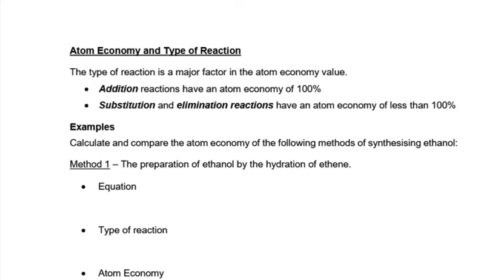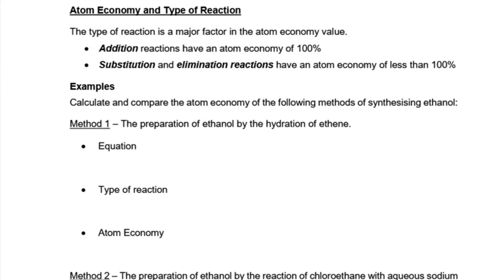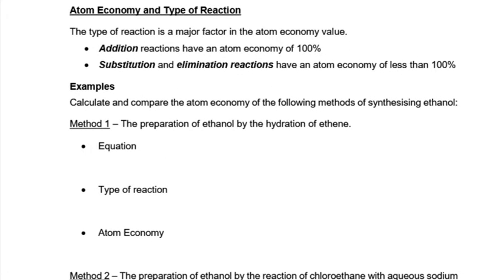Let's consider then how the type of reaction could be changed in order to improve the atom economy. Addition reactions where two things are just added to make one and there's only one product are by their nature going to have 100% atom economy because there's only one product. Whereas substitution and elimination reactions where there's multiple products will have atom economies that are less. So could we work out a way to make our chemicals by addition rather than a different method?